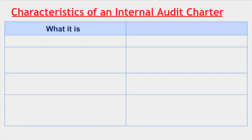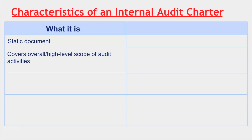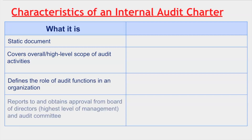Now we will jump into the characteristics of an internal audit charter, covering what it is compared to what it is not. What it is: it is a static document that should only be changed if the change is thoroughly justified. It covers the overall high-level scope of audit activities — overall and high-level are key words. It defines the role of audit functions in an organization, and it reports to and obtains approval from the board of directors and audit committee.